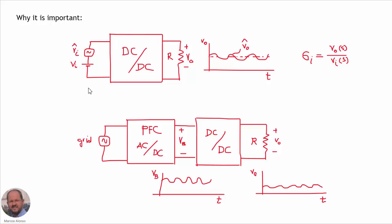First, let's see why it is important to know the audio susceptibility transfer function of a DC-DC converter. This transfer function provides information about how a perturbation at the input of our converter is going to be transferred to the output. If we have a DC voltage at the input with a perturbation superposed to it, then at the output we will have the DC voltage with a given perturbation superposed to it. The ratio between these two perturbations is what we call the audio susceptibility transfer function.